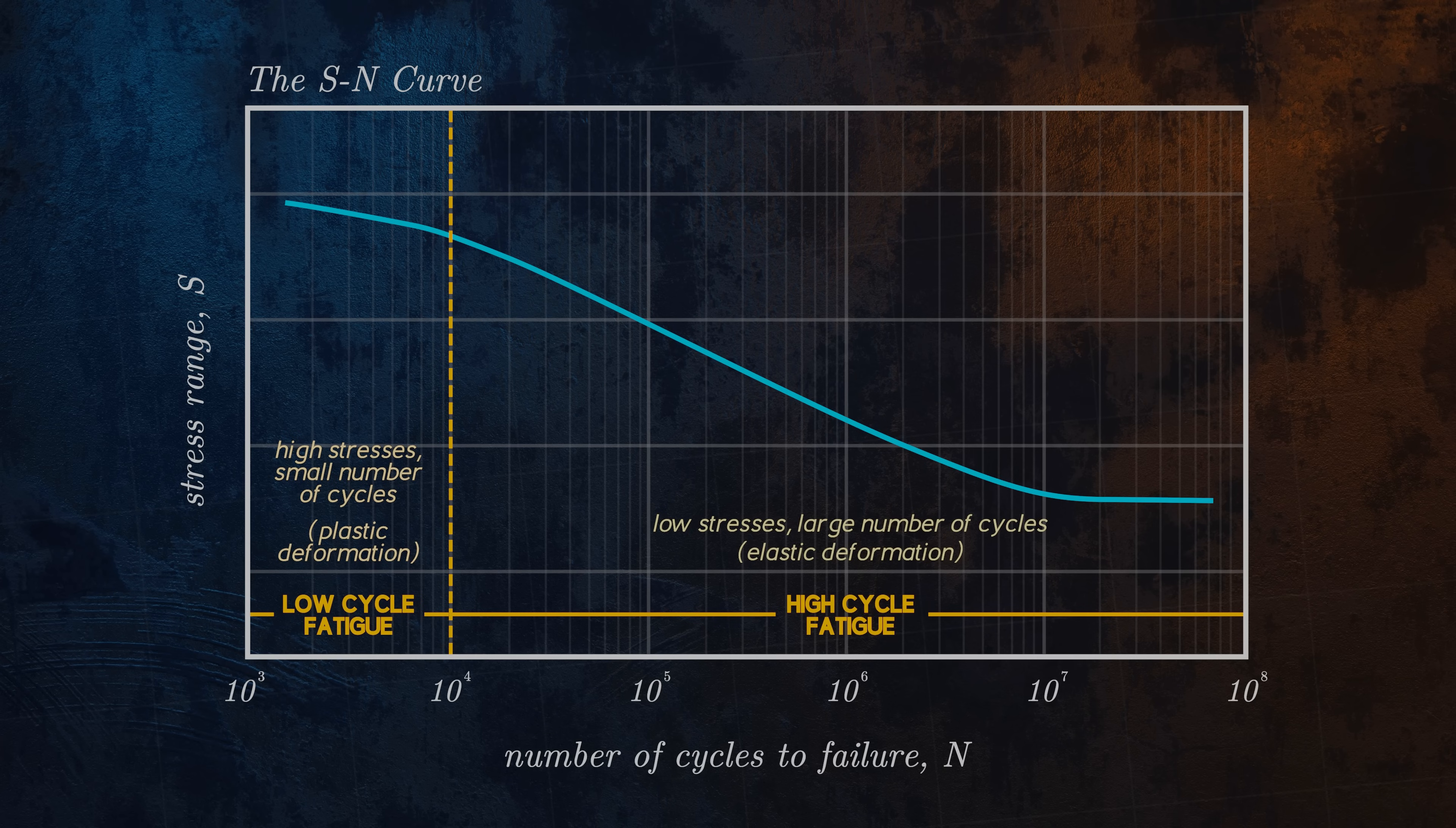In these cases, a strain-based approach, using for example the Coffin-Manson relation, is usually preferred to the S-N curve approach.